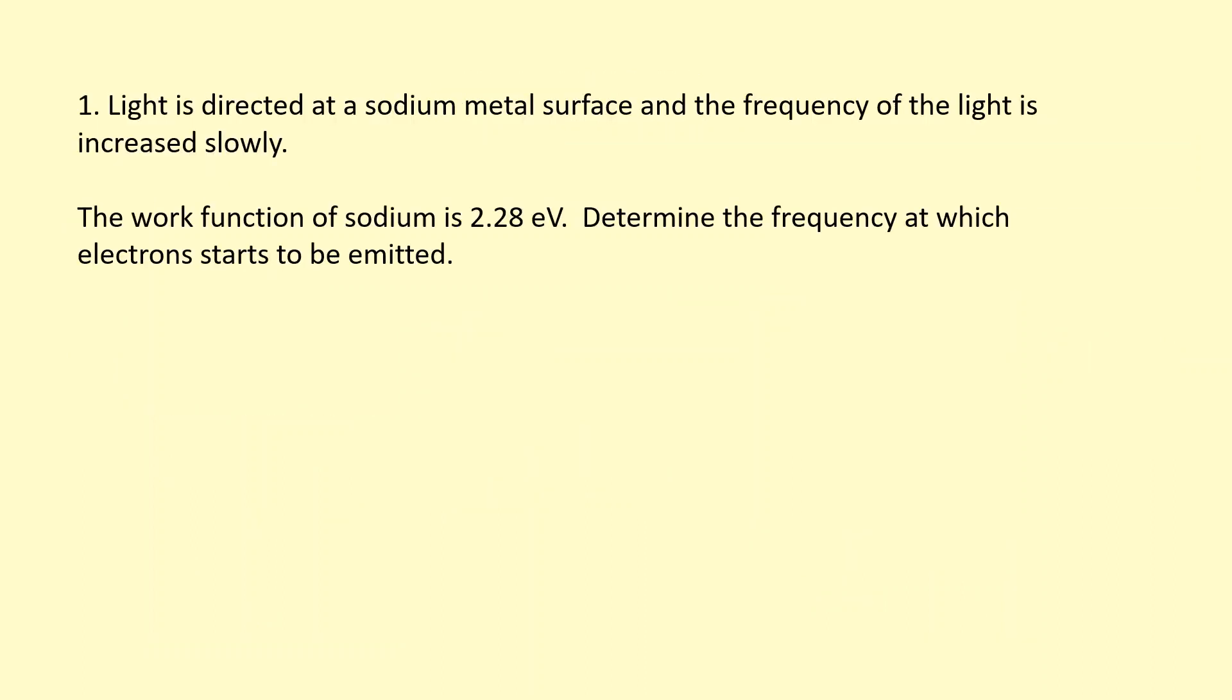In this question, light is directed at a sodium metal surface and the frequency of the light is increased slowly. The work function of the sodium is 2.28 electron volts. Determine the frequency at which electrons start to be emitted.